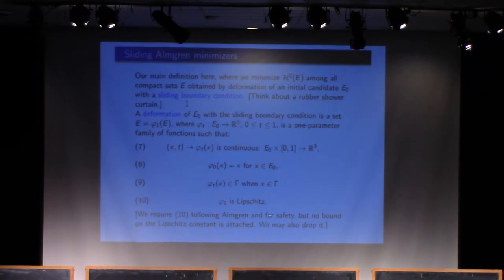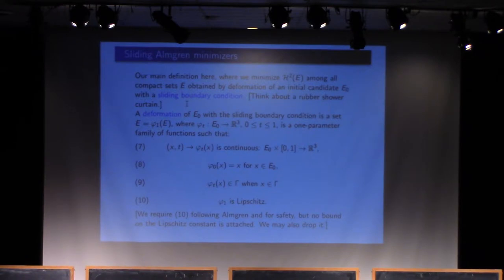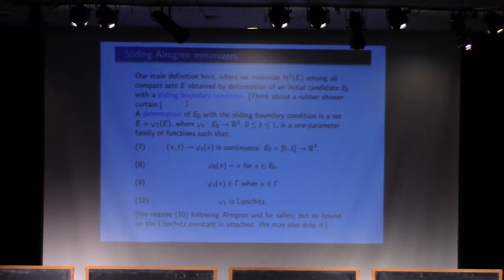The last condition was introduced by Almgren, given this definition away from the boundary. It can be convenient and does not disturb, so you can either drop it or keep it. The last mapping is assumed to be Lipschitz, but without bounds on the Lipschitz constant — it's just Lipschitz. That's a deformation of a set: you move the points continuously, making sure that when a point is on the boundary, it stays on the boundary.